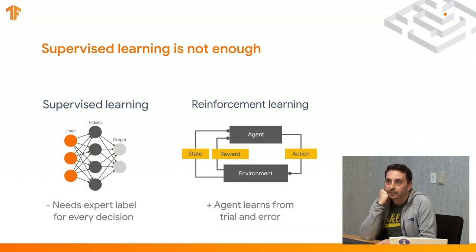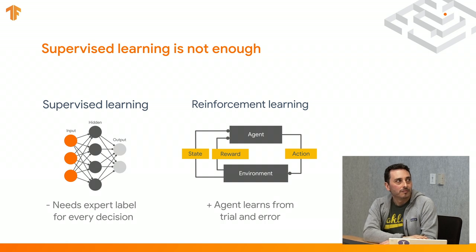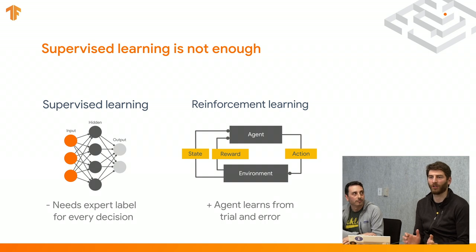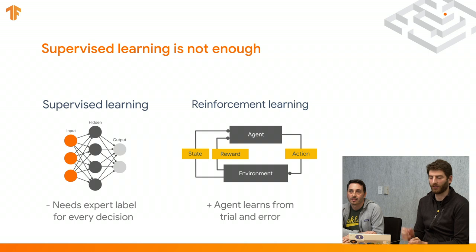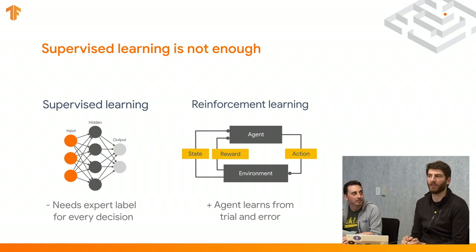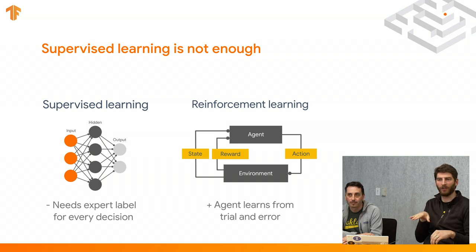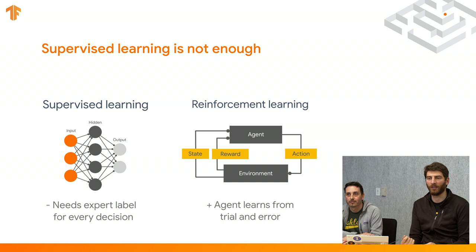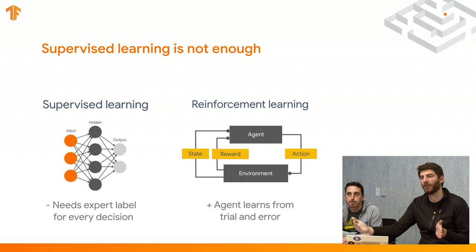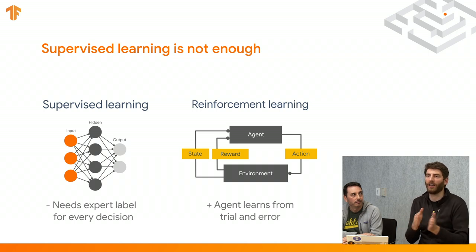There's a whole problem called credit assignment — trying to figure out which part of your actions led to you receiving this reward. If you think about the robot hopping, you could give it a reward based on its current forward velocity. Maybe bending the legs down to push yourself forward will actually move you backwards a little bit and you might even get punished instantaneously for that action, but it's part of the whole set of actions throughout an episode that will lead you to moving forward.